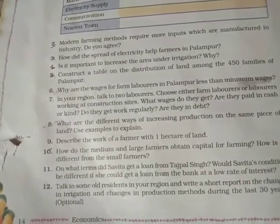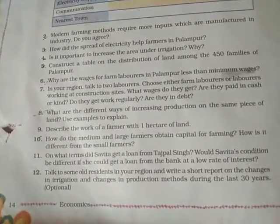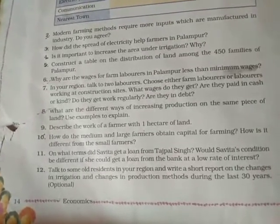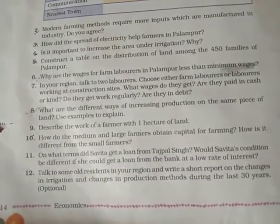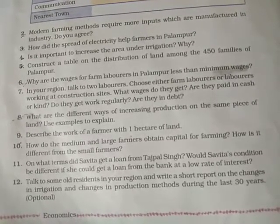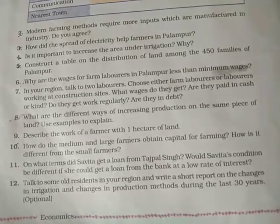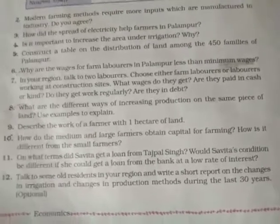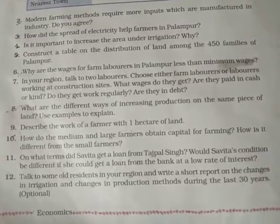Question nine: Describe the farmer with one hectare of land. Such a farmer plows the fields using bullocks or tractors, sows seeds by simply sprinkling by hand, waters the field with the help of a Persian wheel, sprays insecticides using manual pumps, and cuts the crop using hand-operated tools.